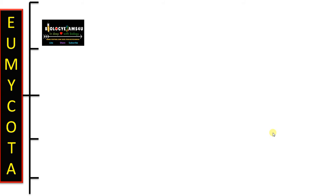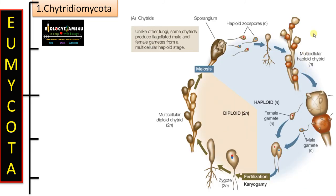The first phylum is Chytridiomycota. They are the most primitive, mostly aquatic, and mostly unicellular. Taking Allomyces as an example — a multicellular chytrid — the hyphae is aseptate and coenocytic, that is, without cross walls. Asexual reproduction is by means of flagellated zoospores, which are spores with a single flagellum. Sexual reproduction is rare; if present, the gametes are isogametes with a single flagellum.